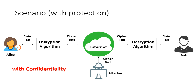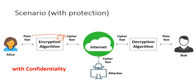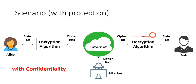To provide confidentiality, whenever Alice wants to send a message — called plain text — it is given as input to an encryption algorithm. The encryption algorithm converts the plain text to cipher text, which is sent through the internet. On Bob's system, the cipher text goes into a decryption algorithm that converts it back into plain text. The attacker can still see the messages, but only sees cipher text, not plain text.